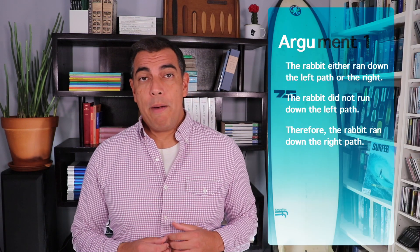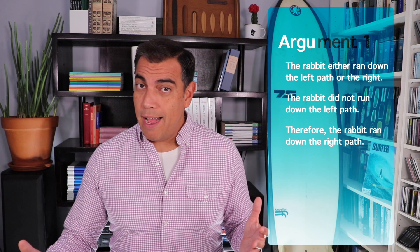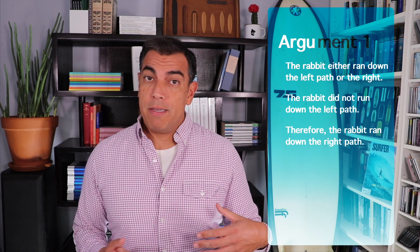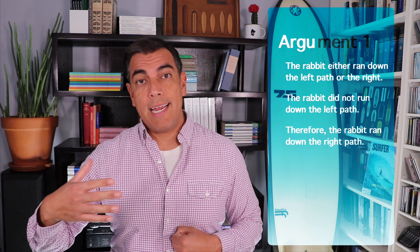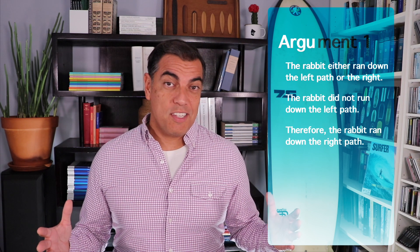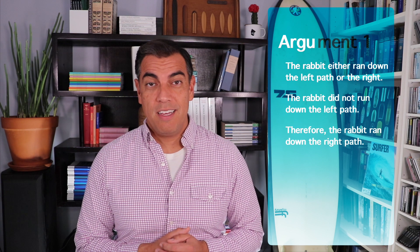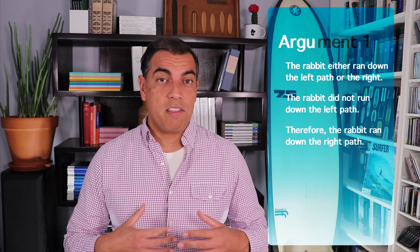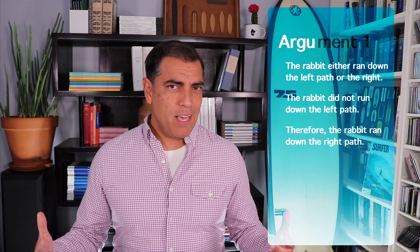The following is an example of an argument given in the book. The rabbit either ran down the left path or the right path. The rabbit did not run down the left path. Therefore, the rabbit ran down the right path. In the book, Smith says this is enough evidence for some people to conclude that dogs think logically.